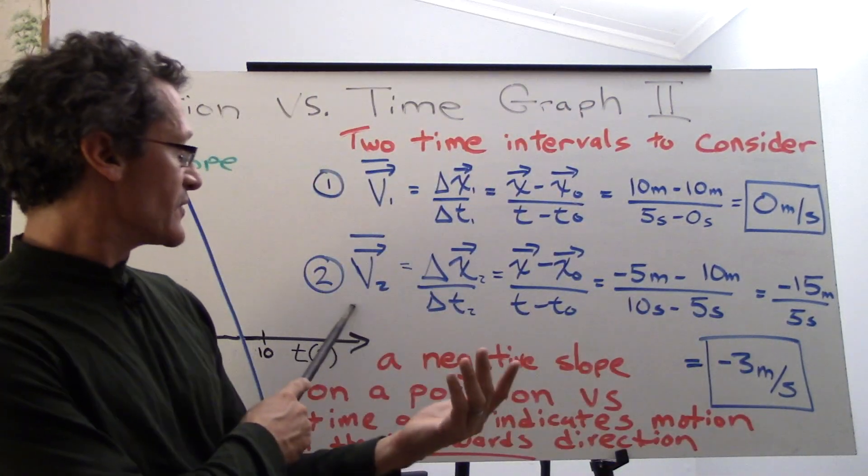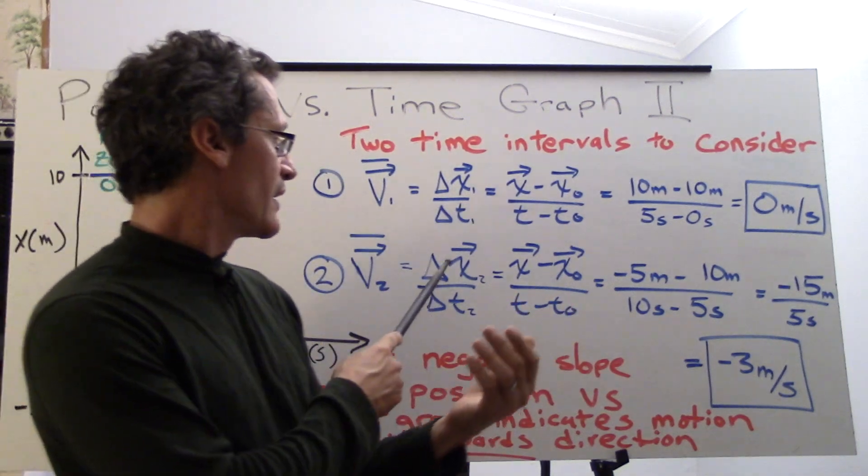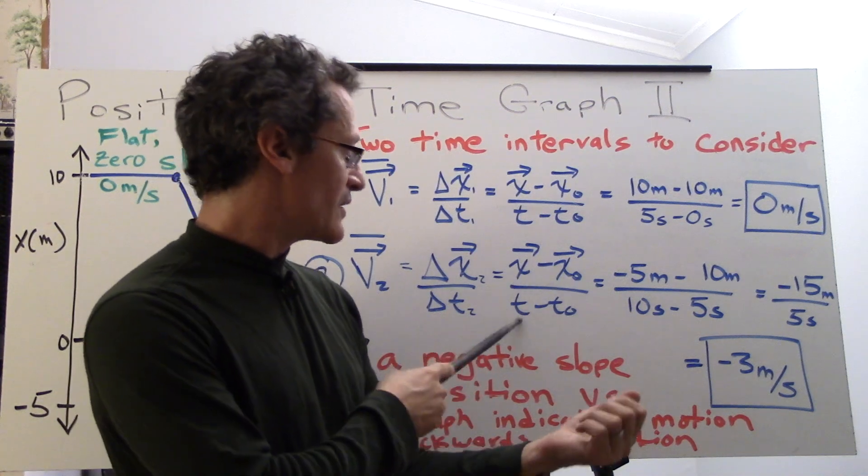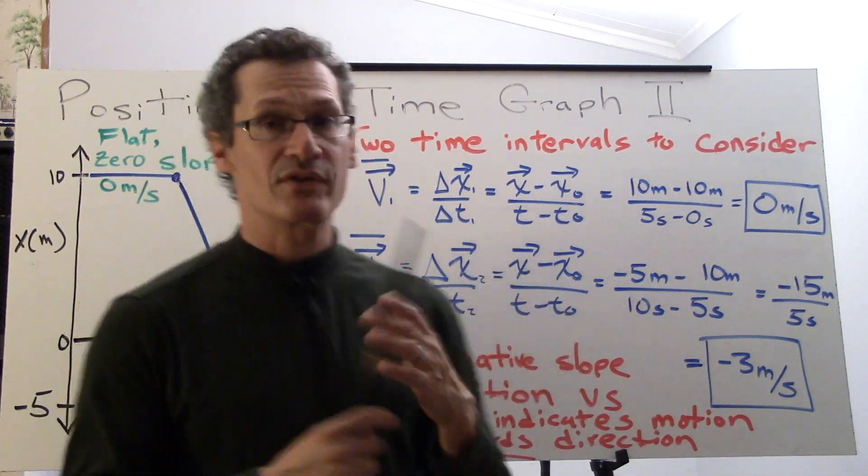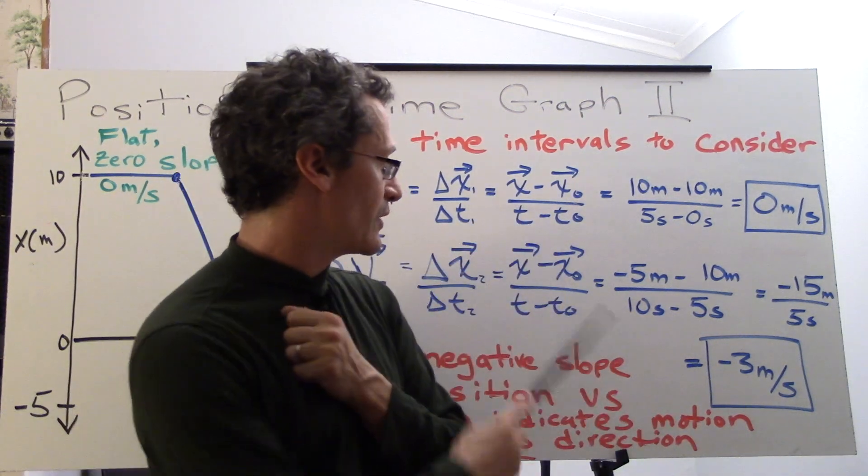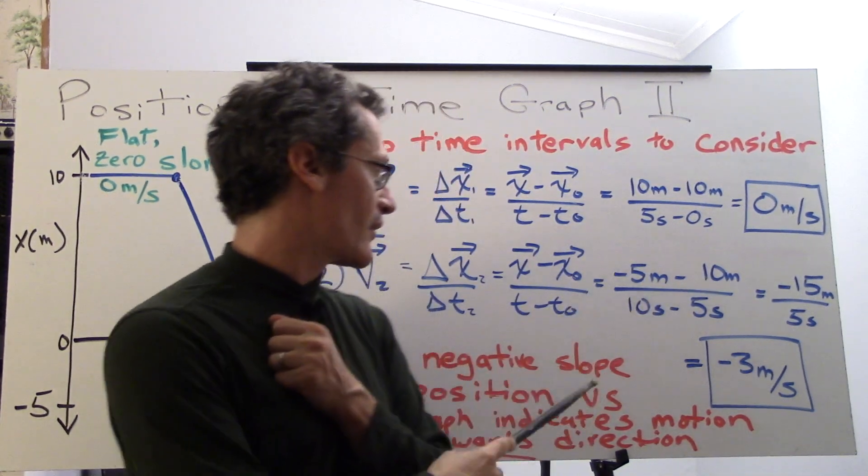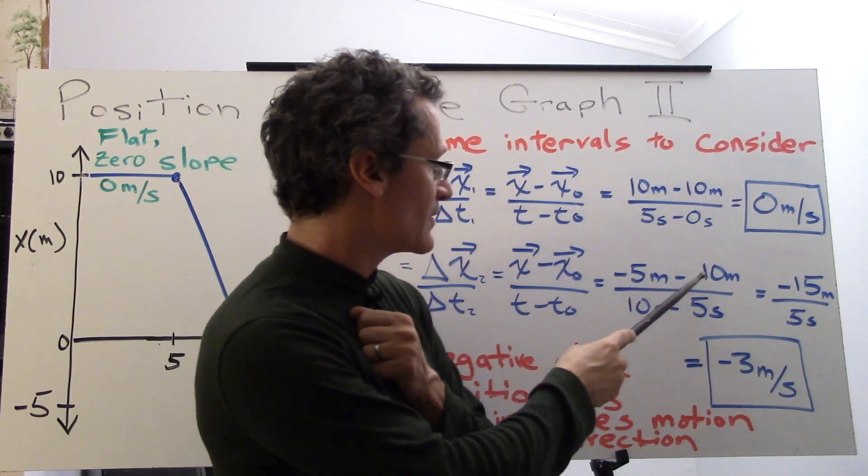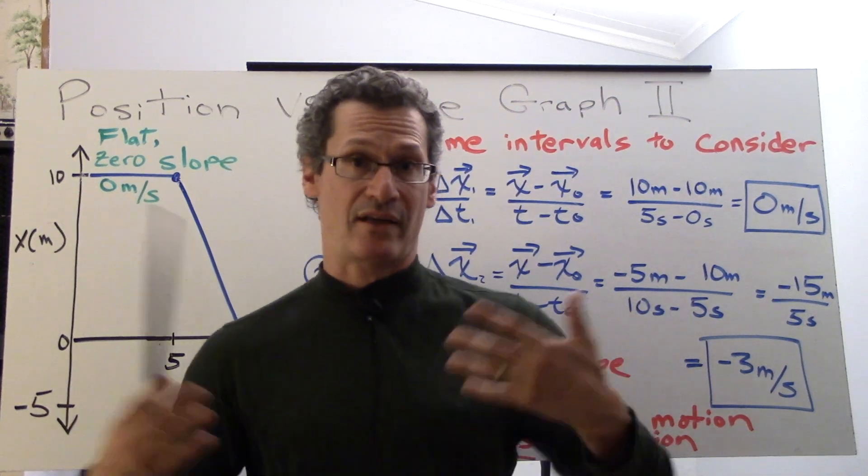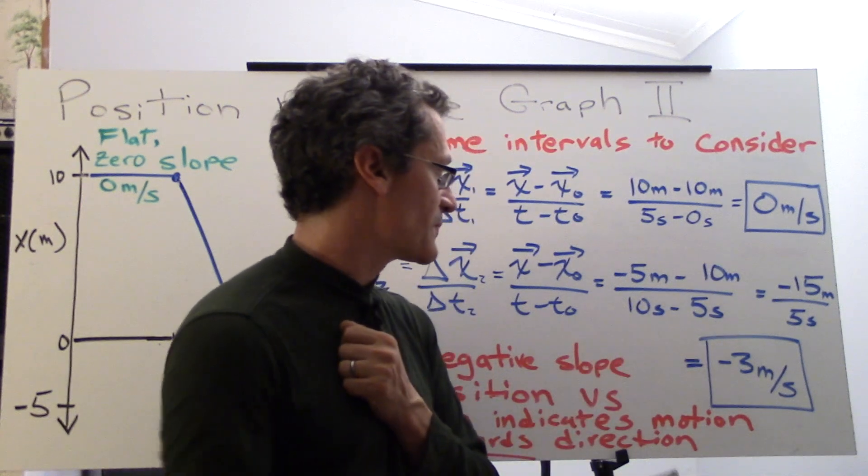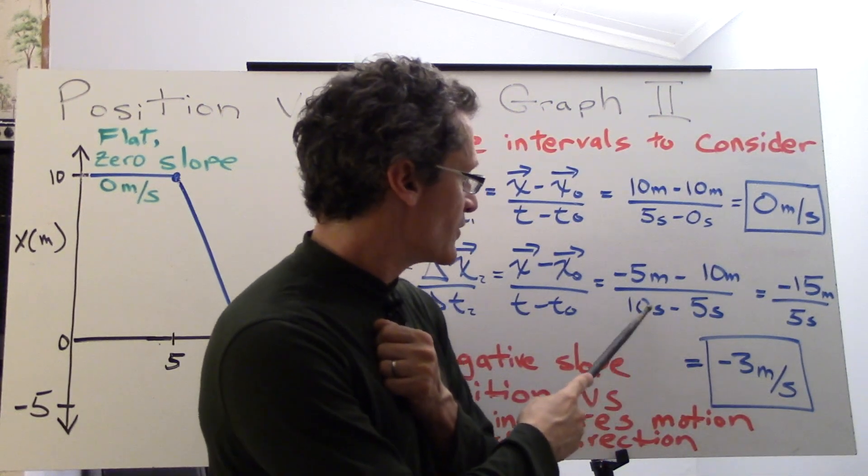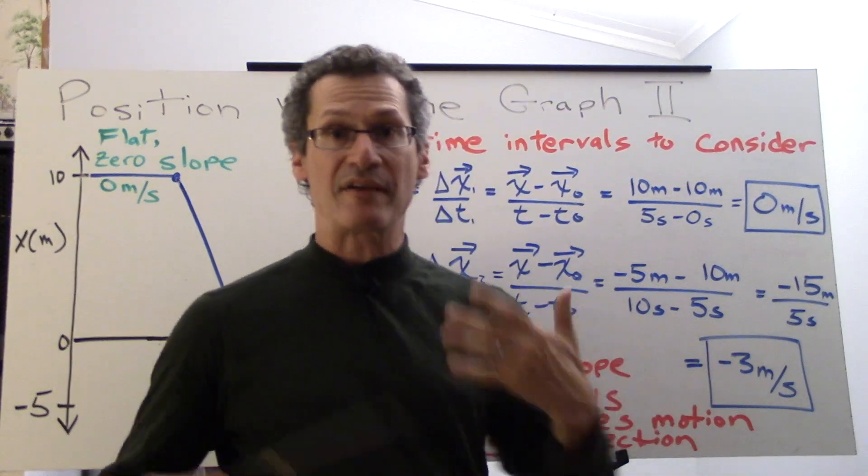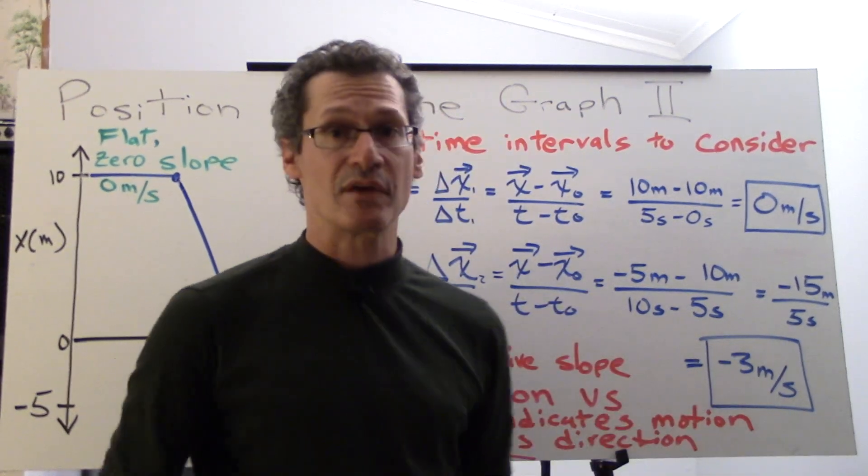Okay so in that second phase of motion v2 we've got the change in x2 over change in time 2. So it's x minus x0, t minus t0. So what's our initial position? What's the original position? x0 is at 10 meters so that goes here and for x we have negative 5. So negative 5 minus 10 is negative 15. So it's like negative 5 plus negative 10 is essentially what this is over the time interval which is 10 seconds minus 5 seconds or 5 seconds. So negative 15 meters divided by 5 seconds gives us negative 3 meters per second.